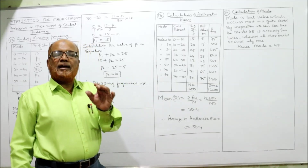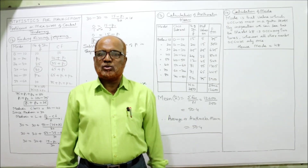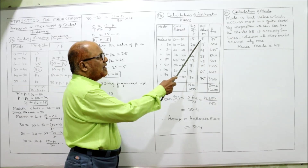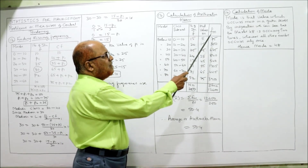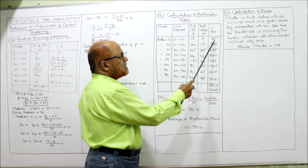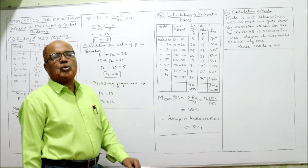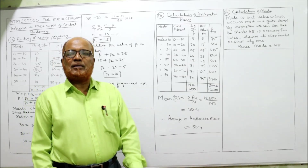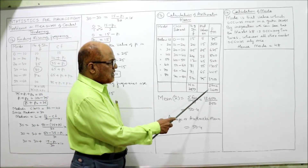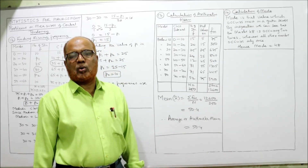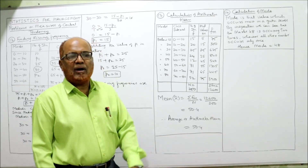For arithmetic mean we require mid values, not cf. Mid values: (0+10)/2 = 5, (10+20)/2 = 15, (20+30)/2 = 25, and so on. Then multiply f × m to get fm values: 15 × 5 = 75, 20 × 15 = 300, 25 × 25 = 625, and so on. The total of fm is 12,600. Arithmetic mean = Σfm / n = 12,600 / 250 = 50.4.